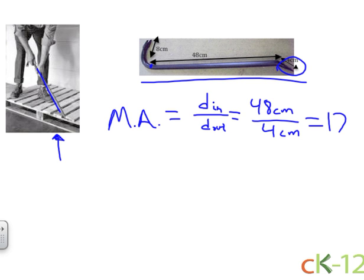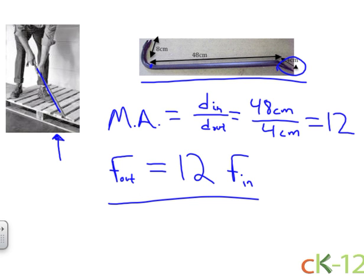So it's a mechanical advantage of 12. That means the output force that you get from this is equal to 12 times the input force. It's all about mechanical advantage in this world.